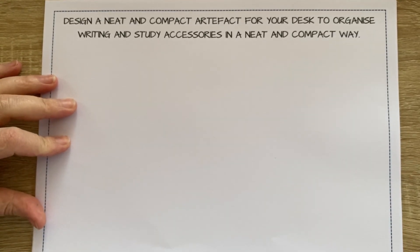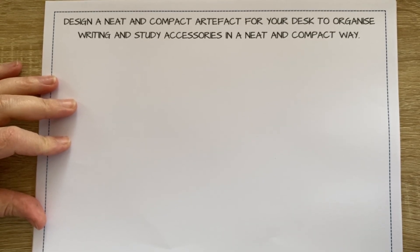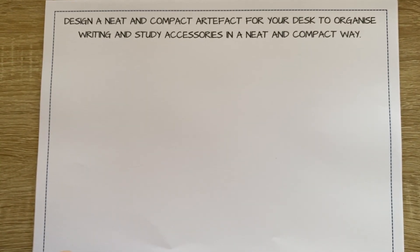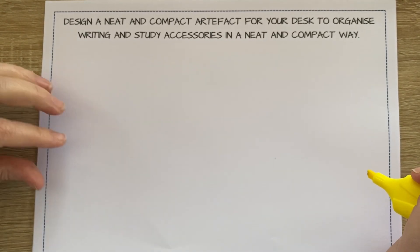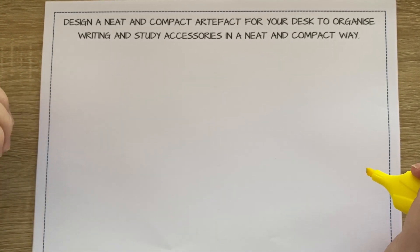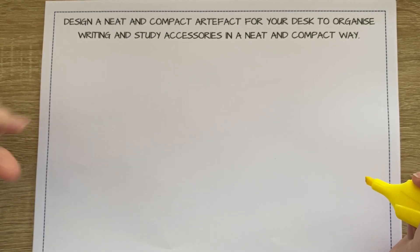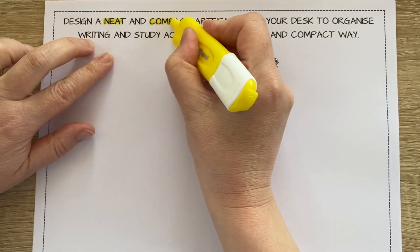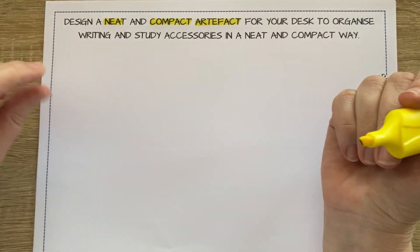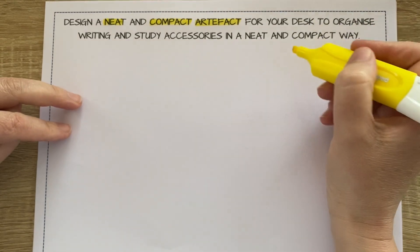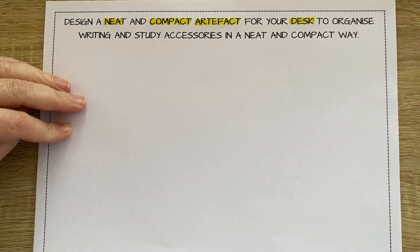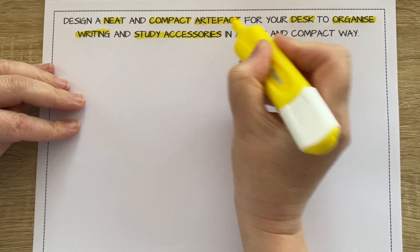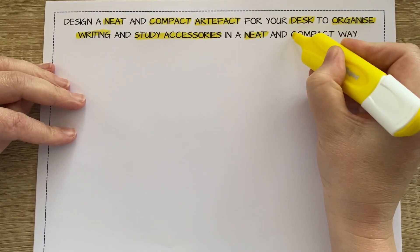To start with, I have to analyze this brief. Before I can analyze anything I need to figure out what the important things in the brief are — what has to be in it, what I have to talk about and think about. As I read through it I'm going to start by highlighting the important words. It says to design a neat and compact artifact — that's just another word for an item or object — for your desk, to organize writing and study accessories, and it needs to be neat and compact.